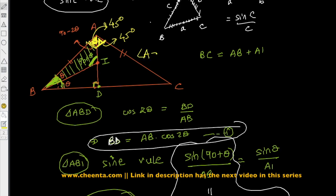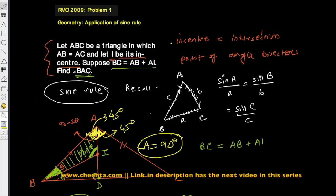So angle A equals 90 degrees — that's what we were trying to find out. Notice that this particular problem can be done without using trigonometry at all, and it's in fact advisable and interesting to do that. But it's also useful to have several tools in your arsenal and to use those tools to solve the same problem in different ways. This trigonometric tool of the sine rule can be very handy even in more complicated scenarios. Thanks for watching and solve great problems!